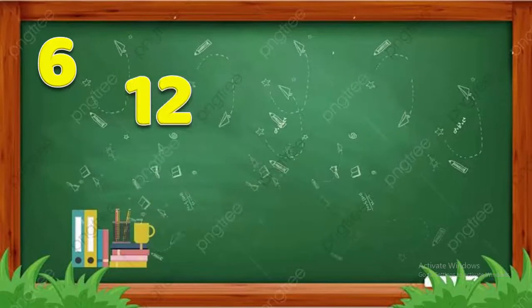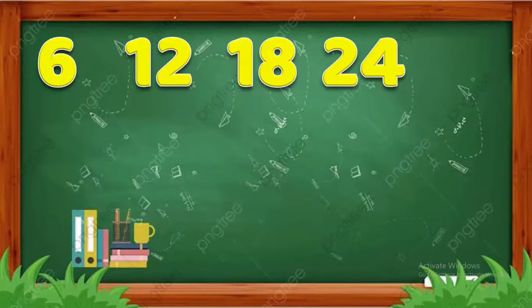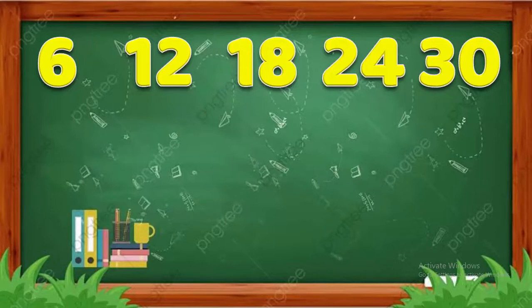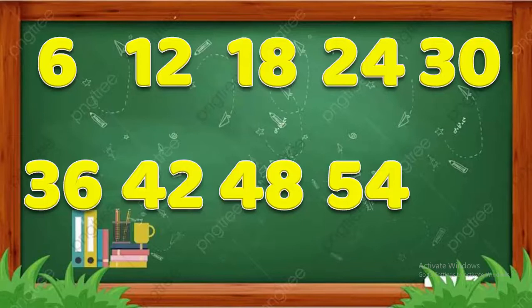6 1s are 6. 6 2s are 12. 6 3s are 18. 6 4s are 24. 6 5s are 30. 6 6s are 36. 6 7s are 42. 6 8s are 48. 6 9s are 54. 6 10s are 60.